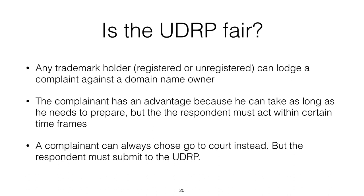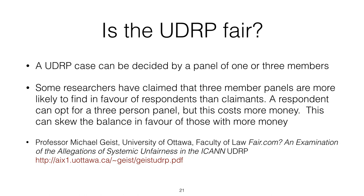Where it's possible that the courts would come to a different decision than the UDRP, the trademark owner can choose to go to court, but the domain name owner can't make that choice. A UDRP case can be decided by a panel of one or three members. Some researchers have claimed that three-member panels are more likely to find in favour of domain name holders than trademark owners. If a complaint is filed, the domain name holder can opt for a three-person panel, but that costs more money — which skews the balance in favour of those with more money.